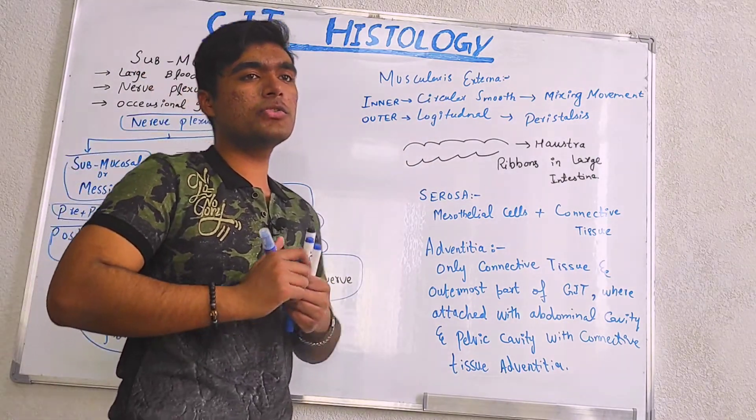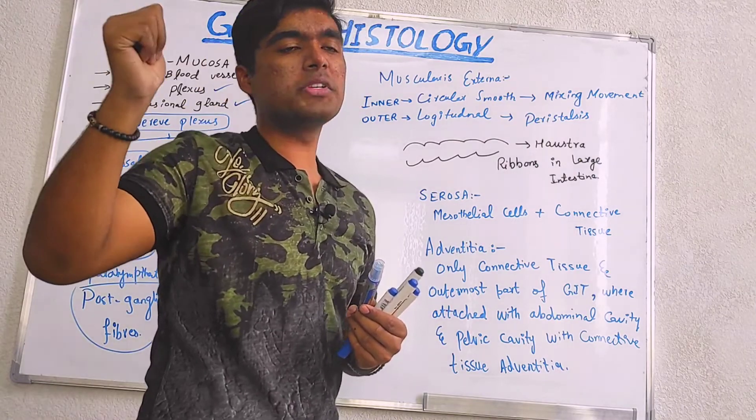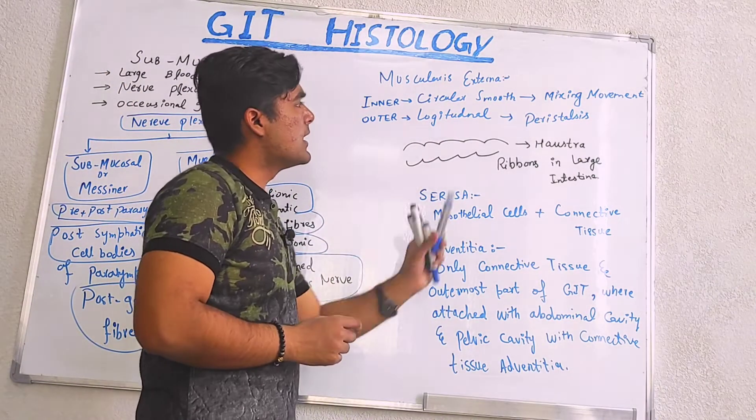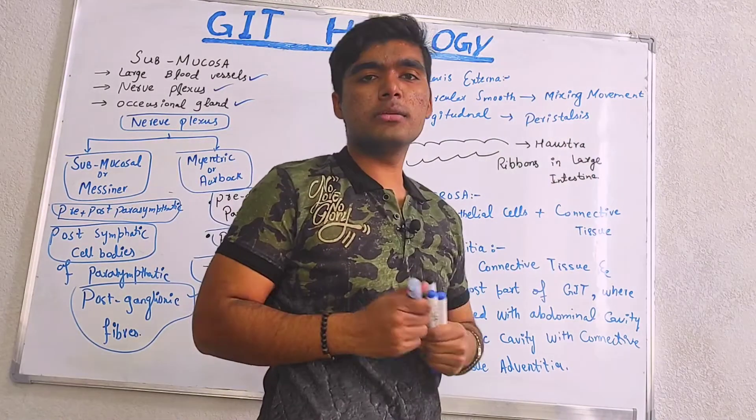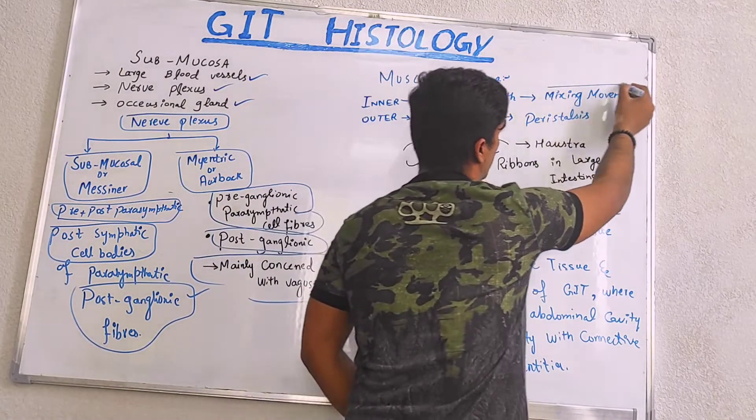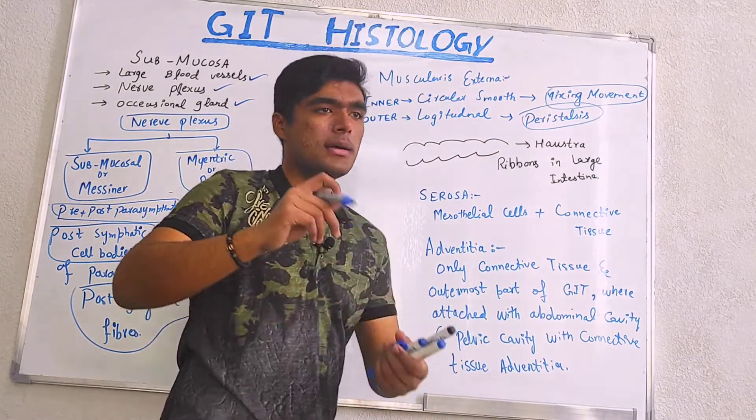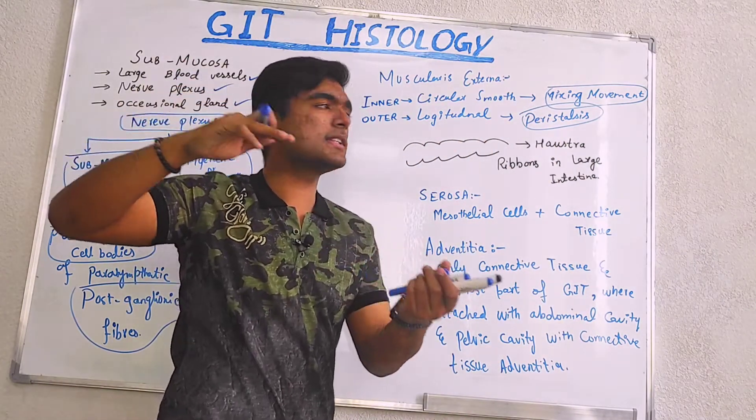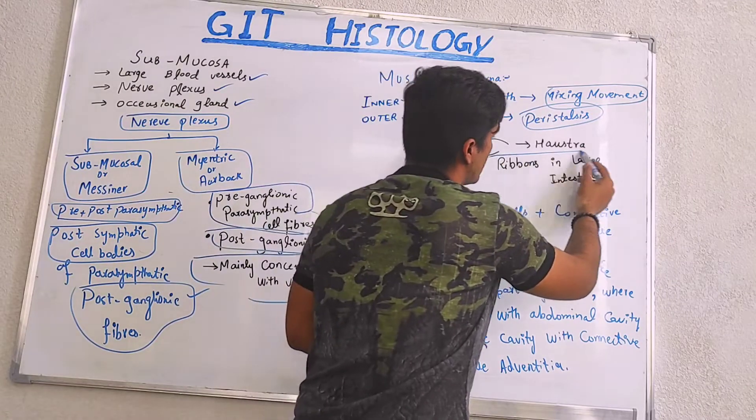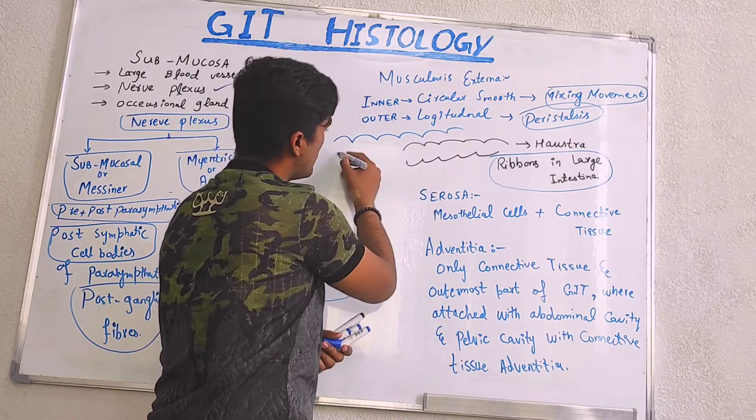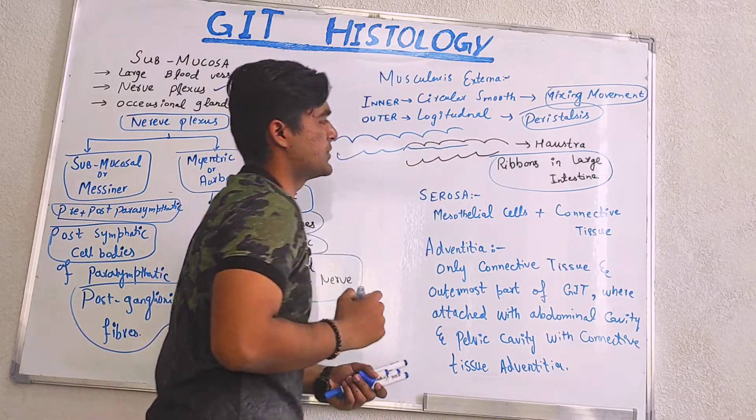Muscularis externa, it is divided into two layers. Initially we discussed it: inner is circular, outer is longitudinal. Inner layer has a role in mixing movement and outer has its role in peristalsis. And haustra, haustra is basically a ribbon-like arrangement of large intestine. So we say that it is haustra.